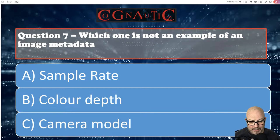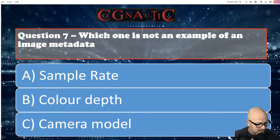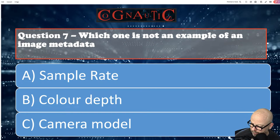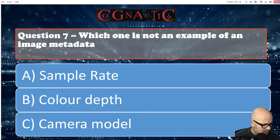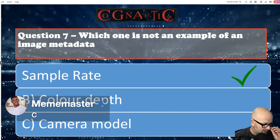Which one is not an example of image metadata? This is teasing out whether you understand which things relate to images, which relate to sound, and which relate to characters. Is it sample rate, colour depth, or camera model? Dan said C, Meme Master said C as well. The answer is A — because sample rate has to do with sound, doesn't it? It's about sampling sound. Tricky. So you need to go away and learn those.